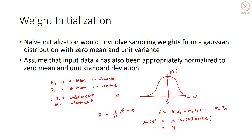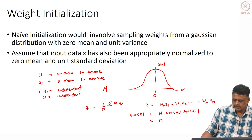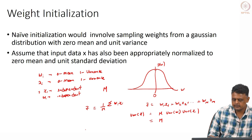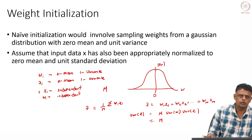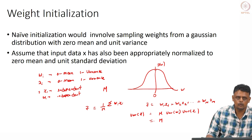The implication is that if you sample W from a Gaussian with zero mean and unit standard deviation, and your features are also normalized that way, then the variance of Z — the input to your sigmoid function — is M times something, so it can take very large values. This causes the sigmoid to saturate, making the derivative zero during backpropagation, so weights do not get updated and you are stuck.